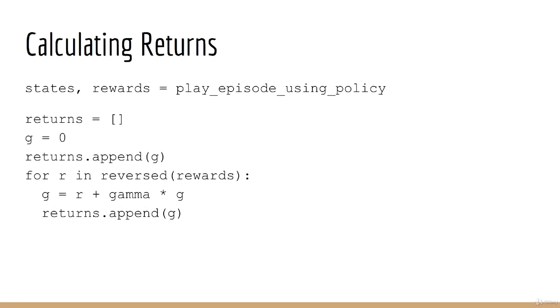Practically speaking, here's how you would do it in code. First you would play an episode using your policy, and you get back a series of states and rewards. Next we initialize a list of returns to an empty list, and we initialize the return to zero. Then, and this is the important part, you loop through the rewards in reverse. Inside the loop, we just use the recursive definition of g. g equals to r plus gamma times g. Then we append g to our list of returns.